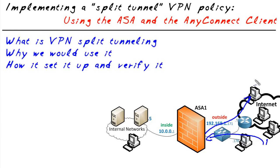If there are hundreds or thousands of clients all doing that, the overhead and the bandwidth utilization on the outside interface may just be too great to allow full tunneling. That would be one of the key reasons we do split tunneling — to lessen the overhead on the ASA itself.